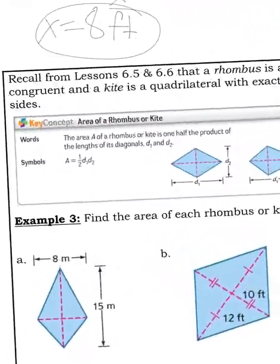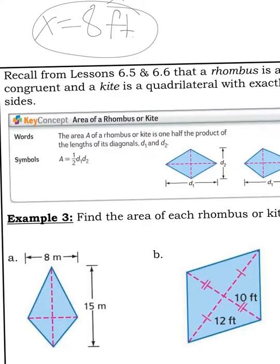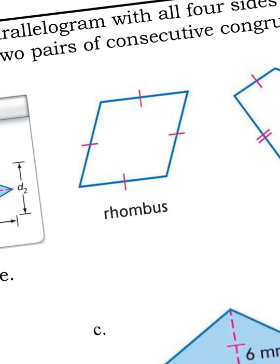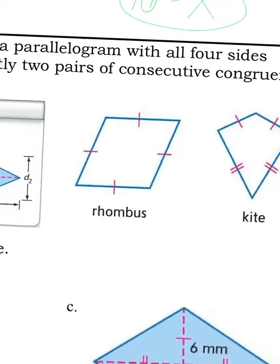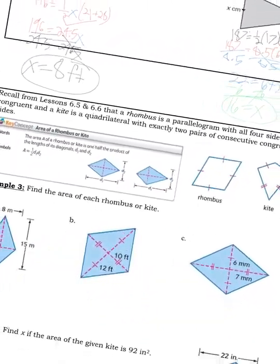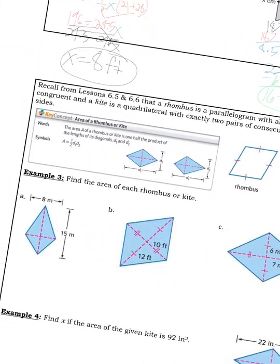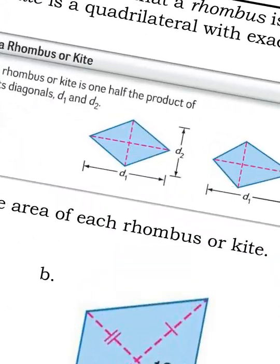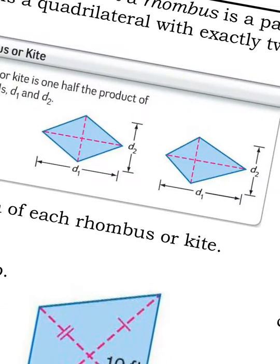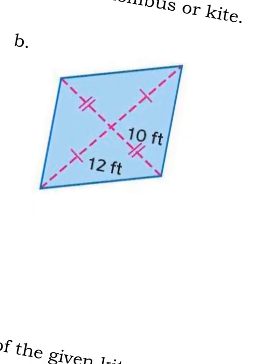This is the area of a rhombus or a kite formula. A rhombus is kind of like a square—it's got four congruent sides, but you do not know if all the angles are congruent. A kite has two pairs of congruent sides. It's the same formula. The diagonal is going from corner to corner. A lot of times you see it written on the outside like this. If it's labeled on the inside, that's going to mean half of it.